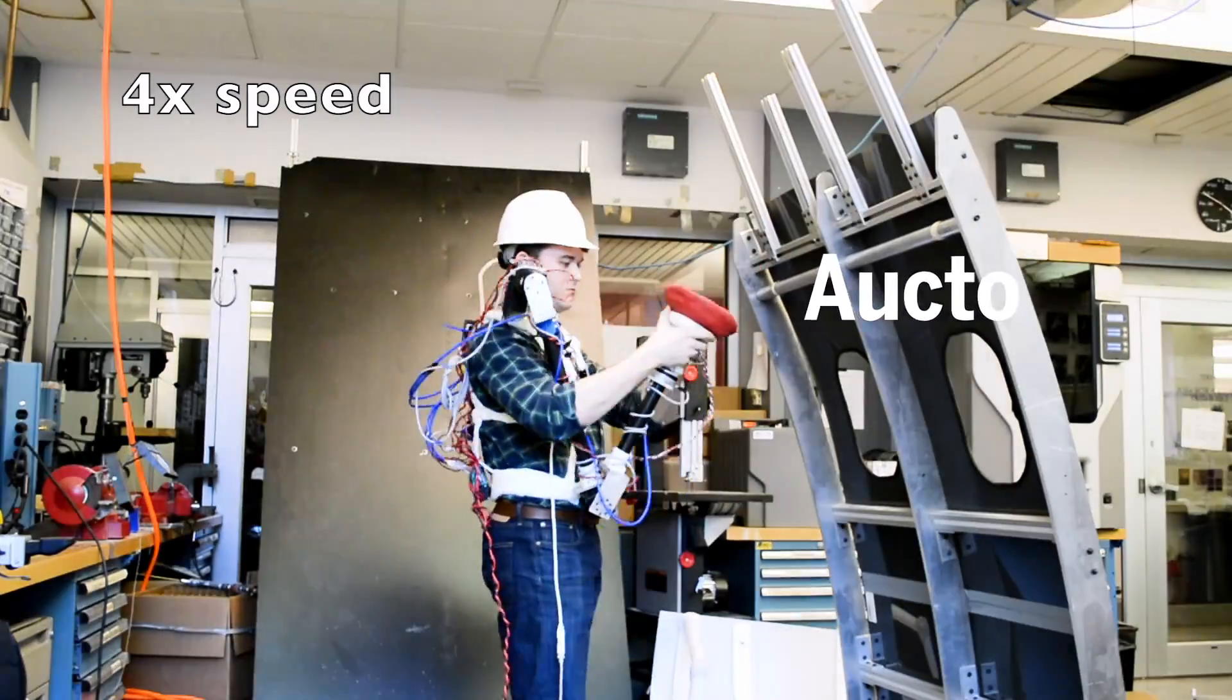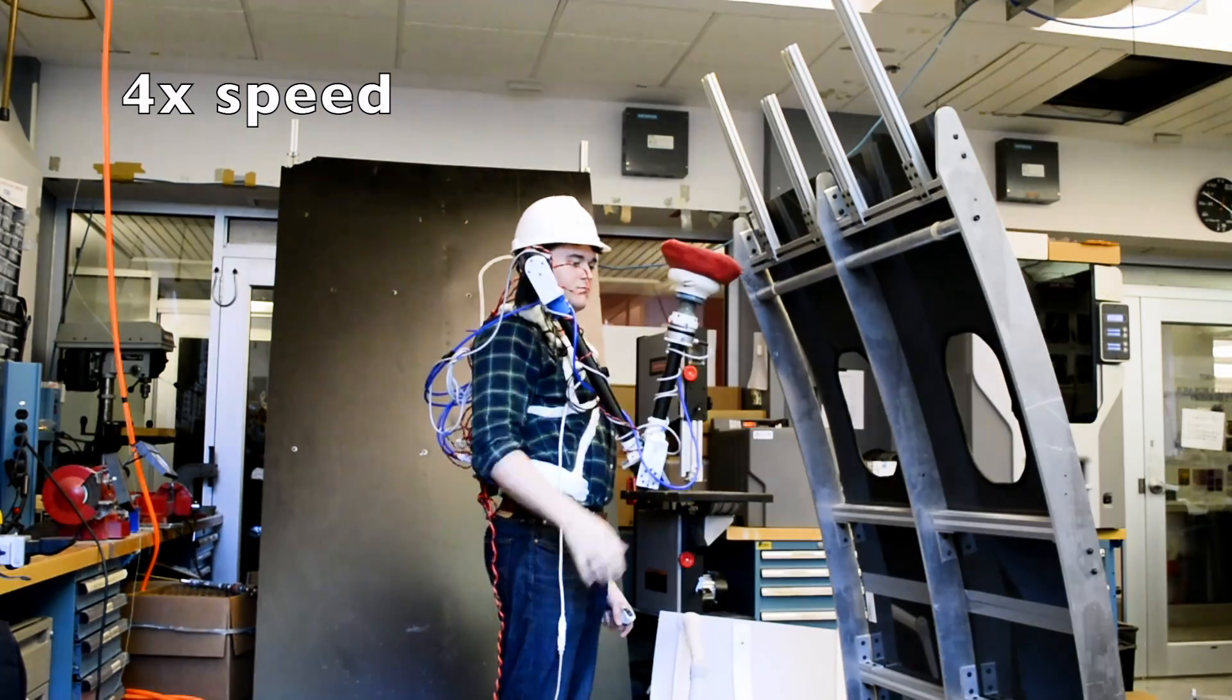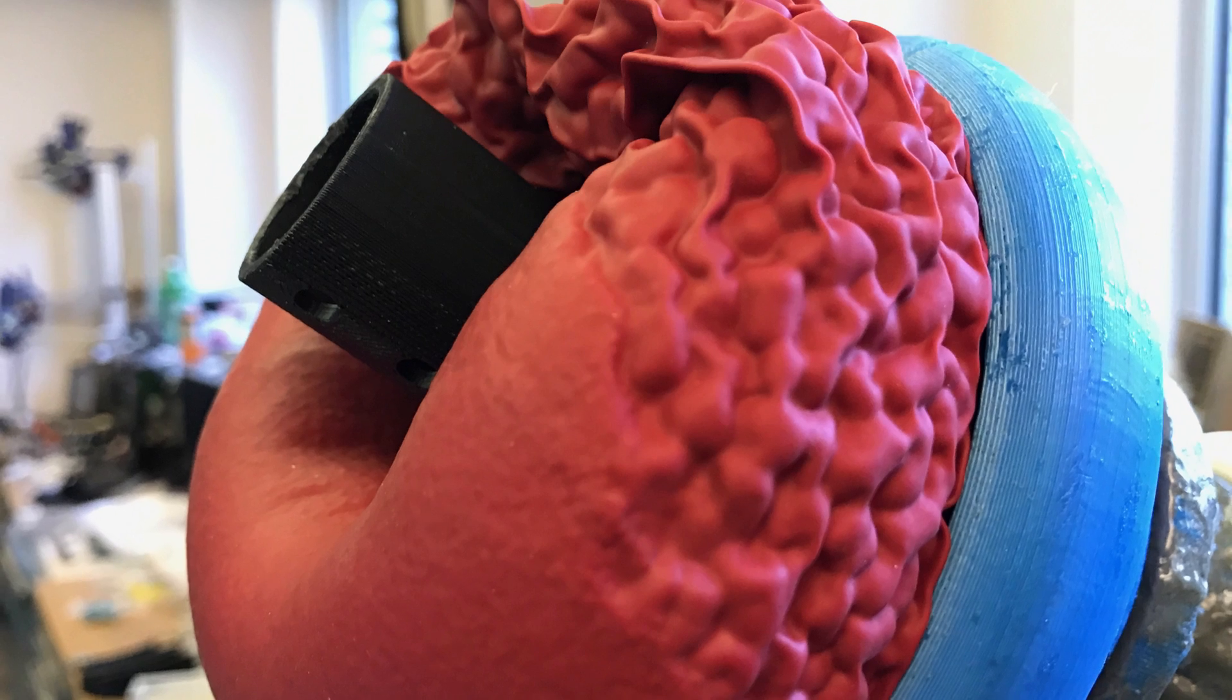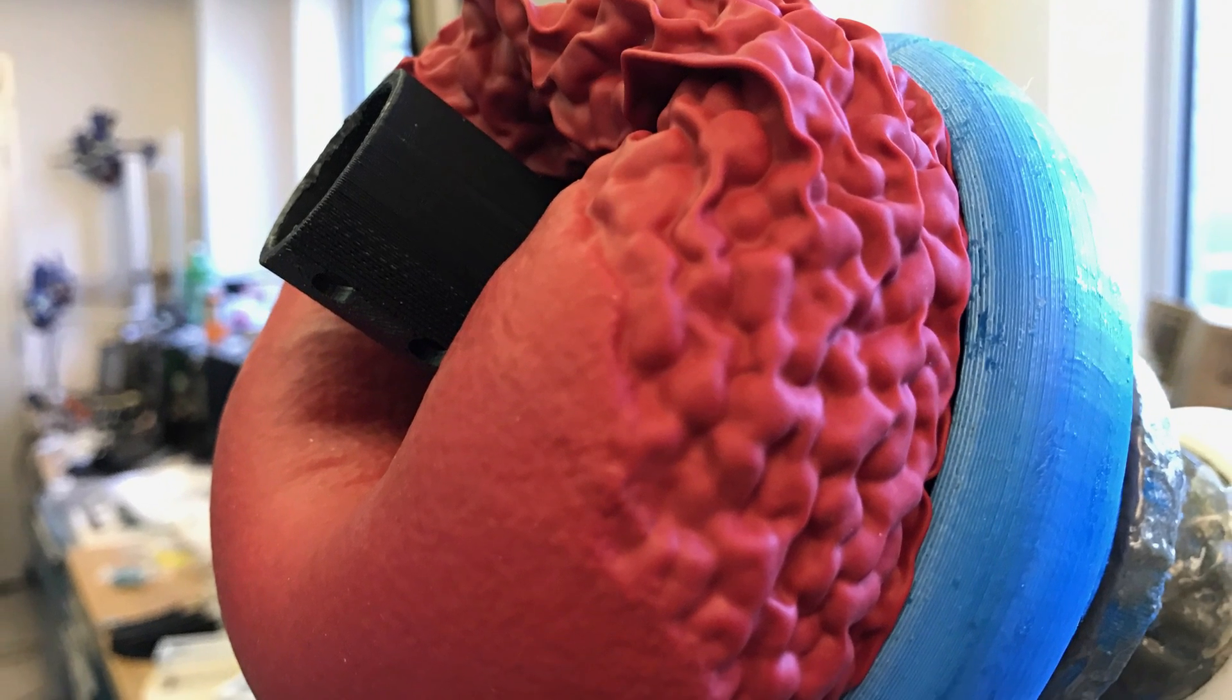It's lighter and simpler than previous extra limbs. The gripper is a balloon filled with foam pellets and coffee grounds. It conforms to objects and holds them tight when air is sucked out.